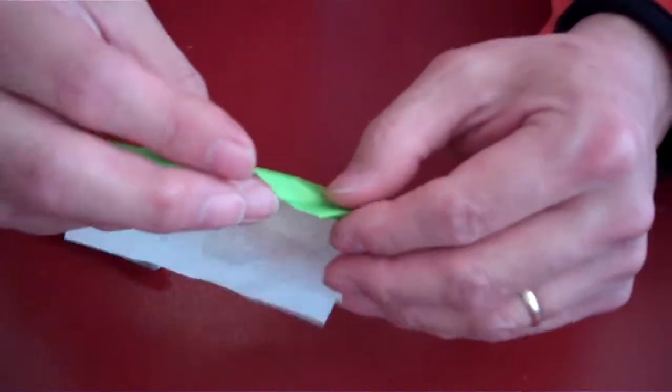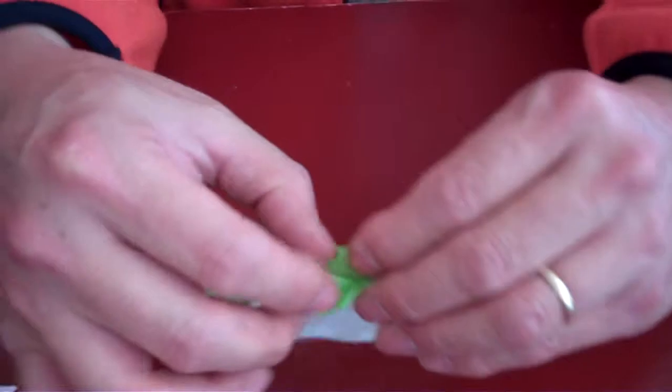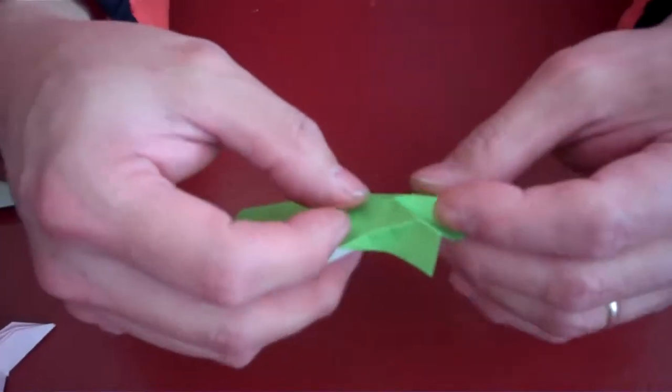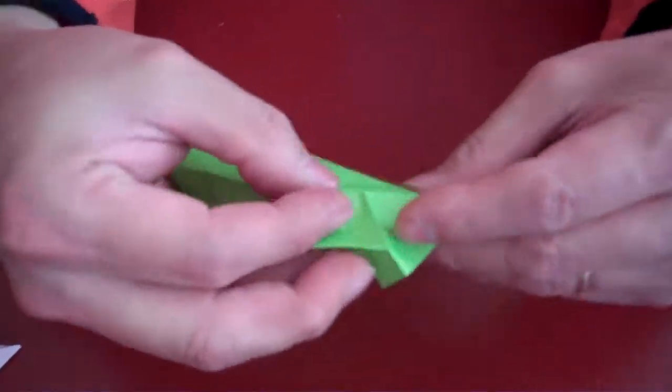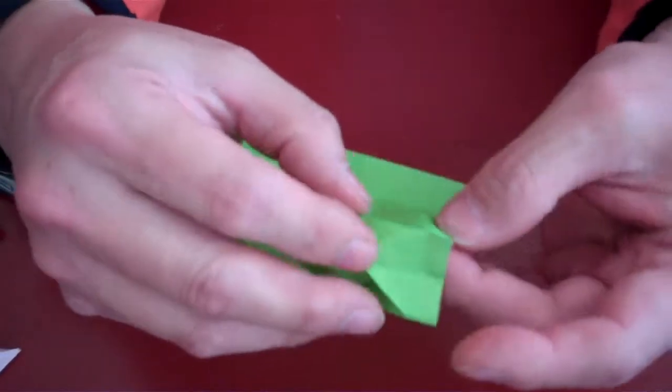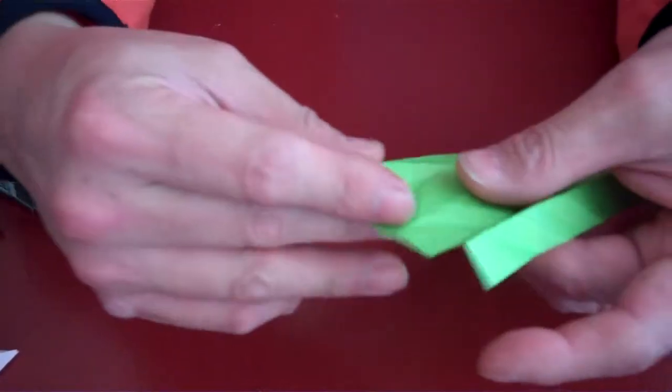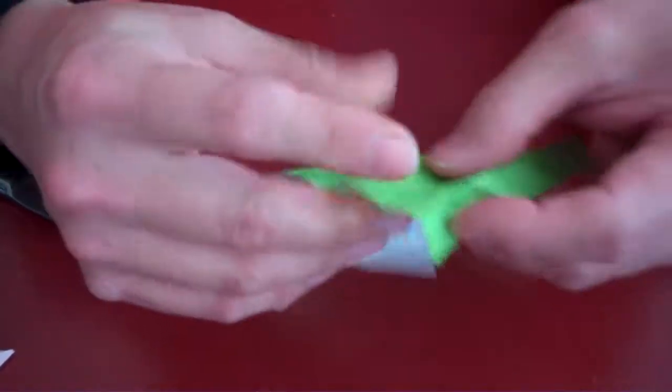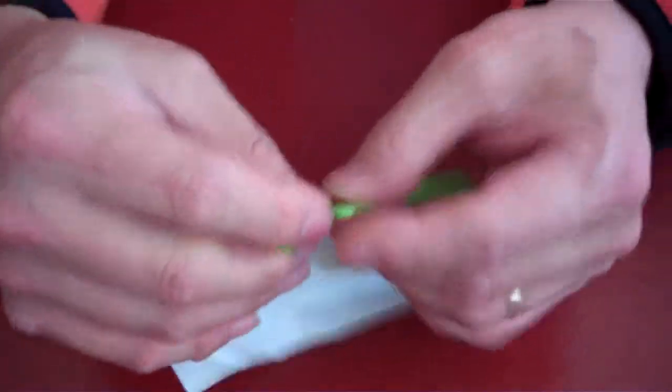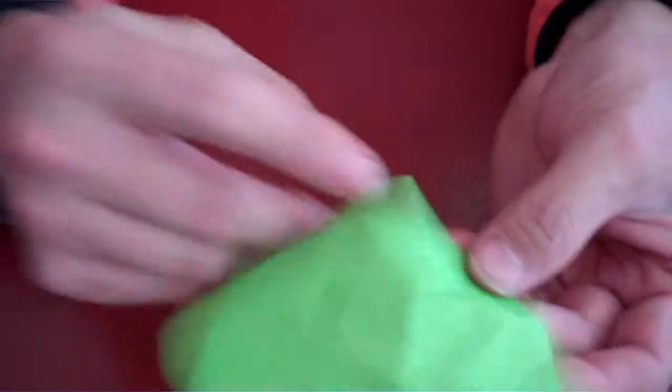So, what we're going to do is reverse half of them so that we have mountains and valleys, right? So, we'll take those, those, those. Make them into valleys.